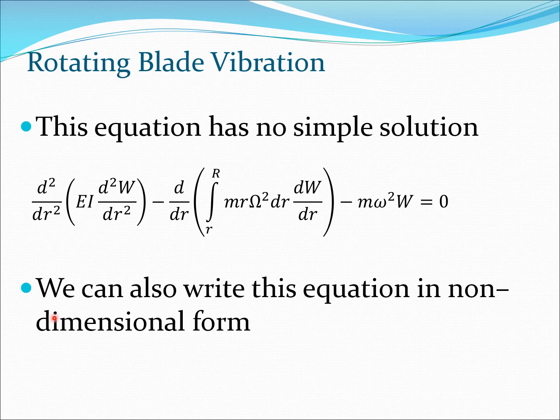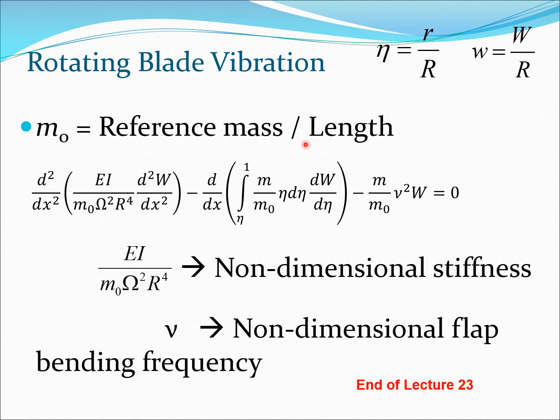Now typically we often work in non-dimensional notation when we work on helicopter dynamics so this equation is often written in a non-dimensional form. To introduce you to this non-dimensional concept we define m naught as some reference mass per unit length, so this could be based on some uniform blade. Then we describe certain non-dimensional nomenclature, we non-dimensionalize r by capital R the blade radius and we non-dimensionalize the displacement by R. Then we can write the governing equation in this particular form where we have a non-dimensional stiffness here and we obtain the non-dimensional flap bending frequencies.